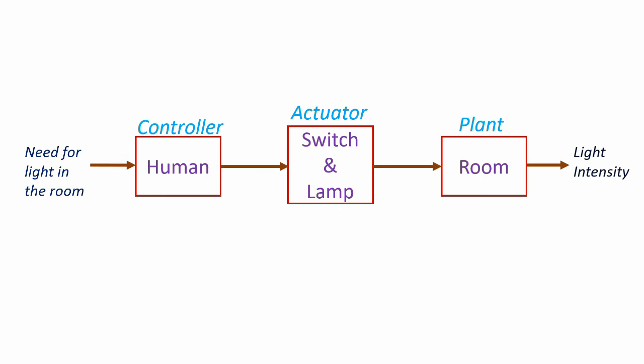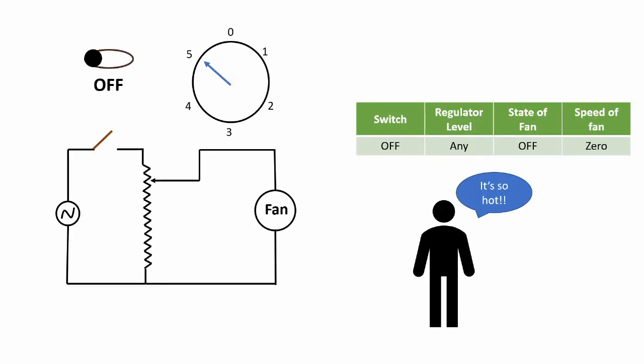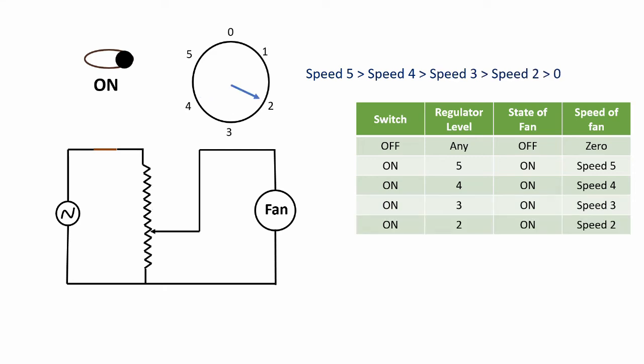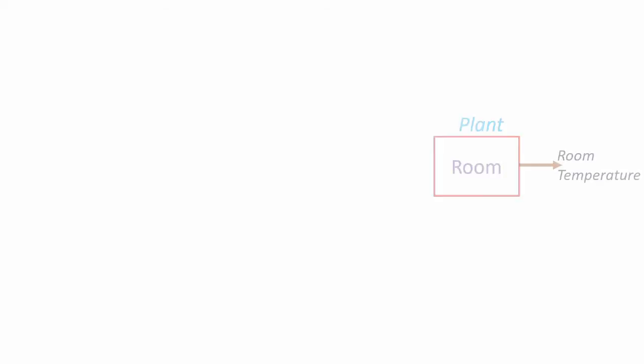Consider the case where there is no switch — in that case we won't be able to do anything, and there won't be any control. Now consider the case of a fan. The fan is switched on based on the temperature conditions in the room. Apart from the on-off control, the speed of the fan can also be varied using a regulator. In this example, we can see that there are seven different control options. By adding a simple regulator into the system, we have five additional controls. This is also an example of an open loop system, but compared to the light situation, here we have more controls.